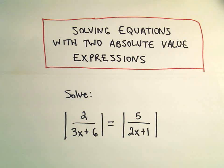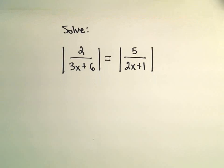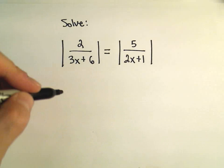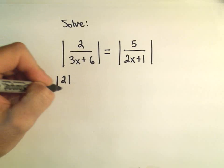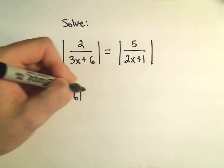Alright, in this video I'm going to do another example of solving an equation involving two absolute value expressions. To turn it into examples similar to some I've done previously, the first thing I'm going to do is take the absolute value of the numerator over the absolute value of the denominator for each fraction.